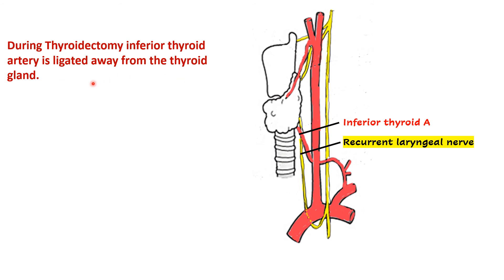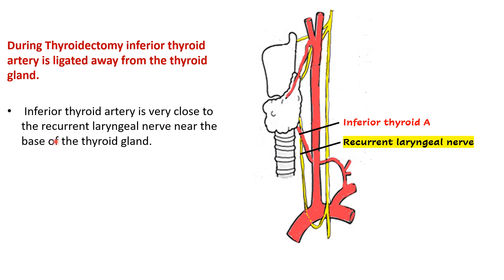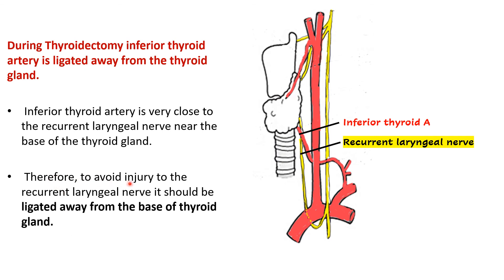In the case of the inferior thyroid artery, it is ligated away from the thyroid gland. Close to the base of the lateral lobe, the inferior thyroid artery and the recurrent laryngeal nerve are very close to each other, whereas the proximal part of the artery is away from the nerve. Therefore, to avoid injury to the recurrent laryngeal nerve, the inferior thyroid artery should be ligated away from the base of the thyroid gland.